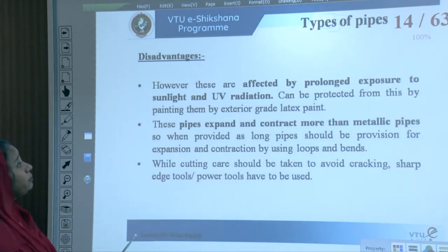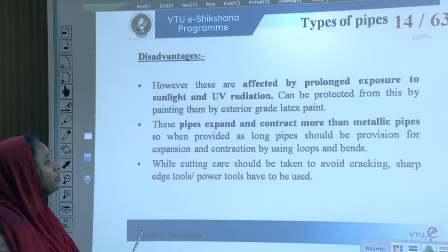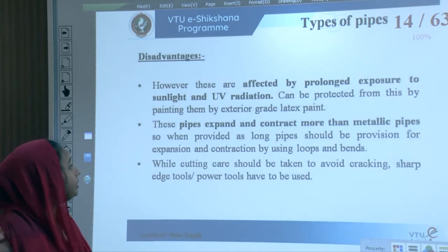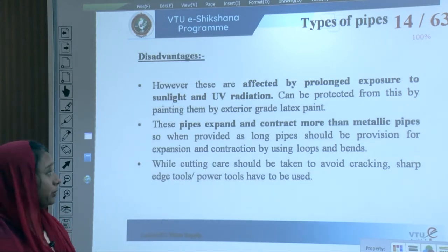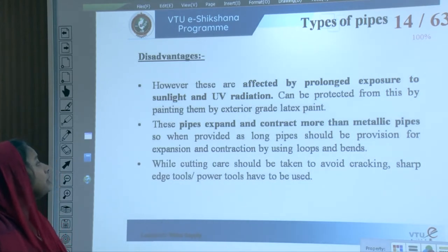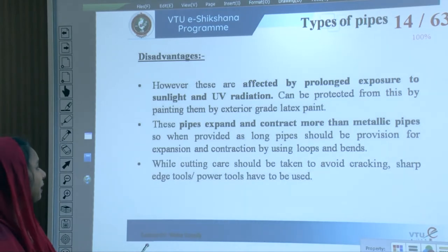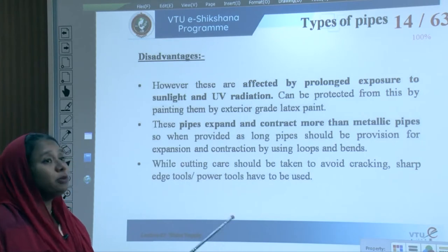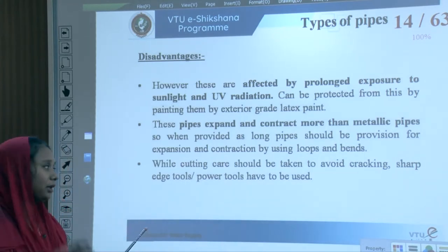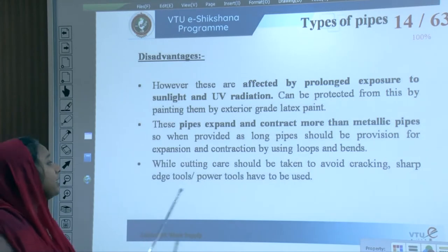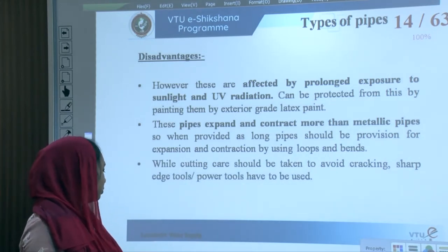A disadvantage of CPVC pipes is that they are affected by prolonged exposure to sunlight and UV radiation, so they must be protected using exterior-grade latex paint. These pipes also expand and contract more than metallic pipes, so when provided as longer pipes, provision for expansion and contraction must be made using loops and bends. Care should also be taken to avoid cracking, using sharp-edged tools for cutting.